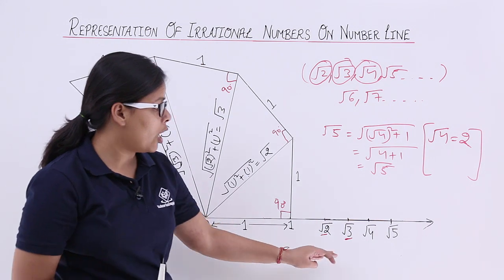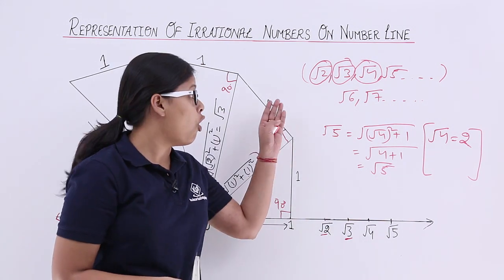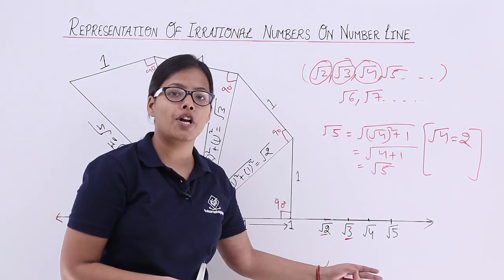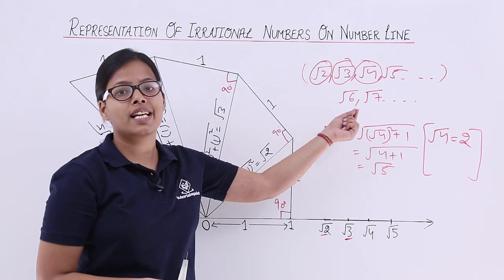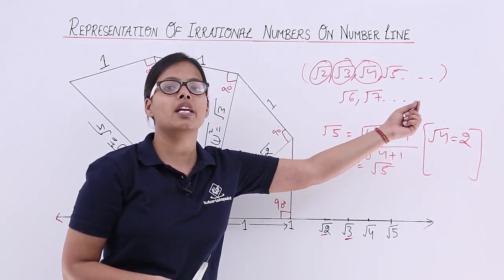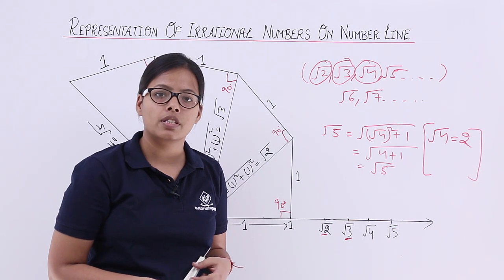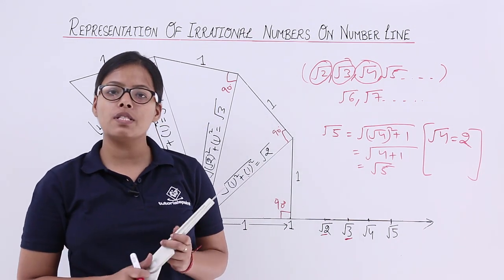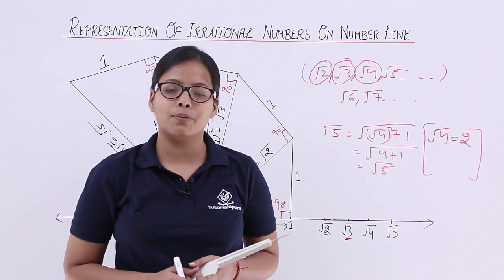So now you know how to plot all these irrational numbers on a number line. You can do this for √6, √7, and many other irrational numbers. I will be taking more problems in the next video. Thank you.